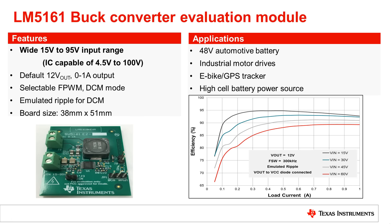The LM5161 buck converter evaluation module can handle an input voltage range of 15 volts to 95 volts, and the default is a 12 volt output that can handle 0 to 1 amp of load. This output can easily be changed by changing some external components on the EVM. There is also a selectable forced CCM or DCM mode. The board size is roughly 38 mm by 51 mm, and you can see the various efficiency curves depending on the input voltage range to the right.